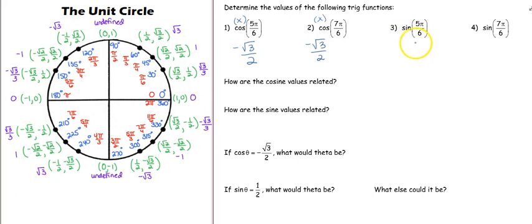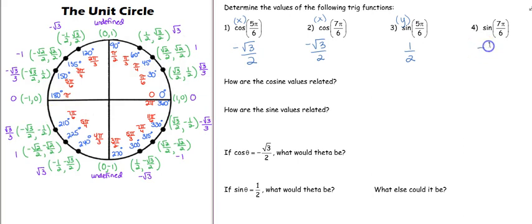Switching it up, now we want the sine of 5π/6. We were just at 5π/6, that 150-degree marker. Sine references the y-coordinate, so when I look at that ordered pair the y-coordinate is 1/2. Then we want the sine of 7π/6 — back down to 210 degrees — the sine is negative 1/2. So for those two angles, 5π/6 and 7π/6, we found both the x and y coordinates.